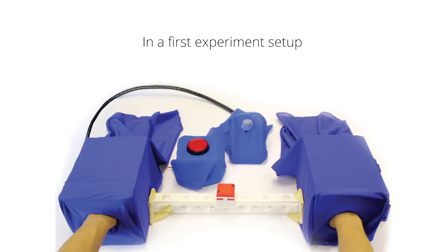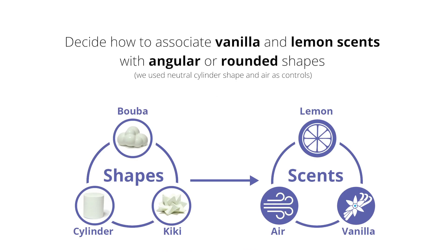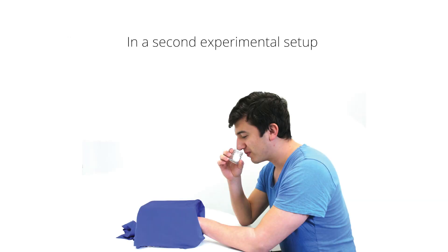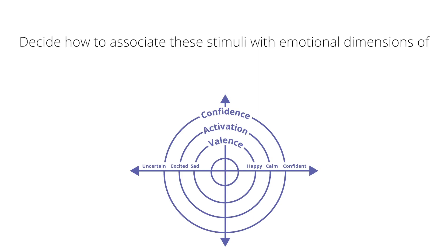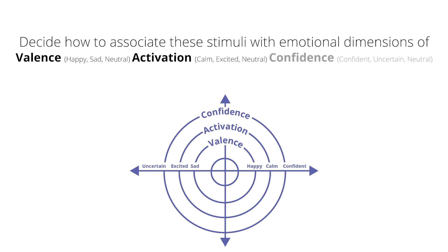In the first experimental setup, participants decided how to associate vanilla and lemon scents with angular and rounded shapes. In the second experimental setup, they decided how to associate stimuli with emotional dimensions of valence, activation, and confidence.